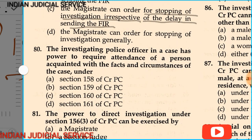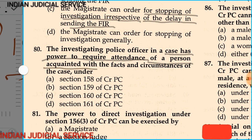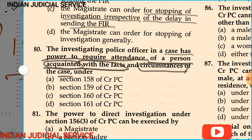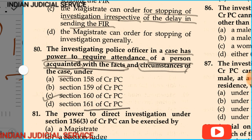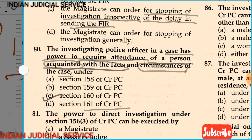Question 80: The investigating police officer in a case has power to require the attendance of a person acquainted with the facts and circumstances of the case under section 158, 159, 160, or 161 of CRPC. The answer is section 160 of CRPC. Section 160 provides the police officer's power to require the attendance of witnesses at the police station.